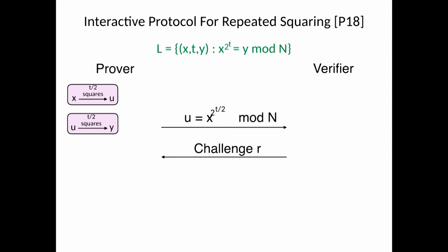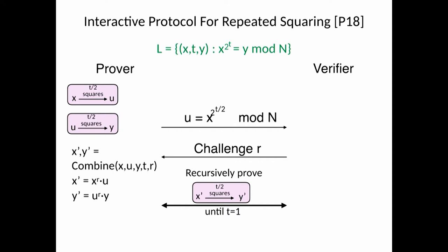The verifier sends a challenge, and then the prover generates something which we call the combined statement using this formula, which I won't go into, and recursively proves a statement about x prime and y prime, both of which are only for t over two steps and not t. So you continue this for log t rounds, and eventually the verifier can be convinced if the prover didn't cheat.